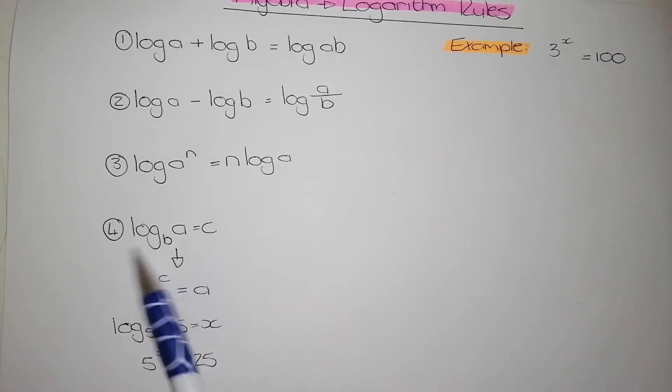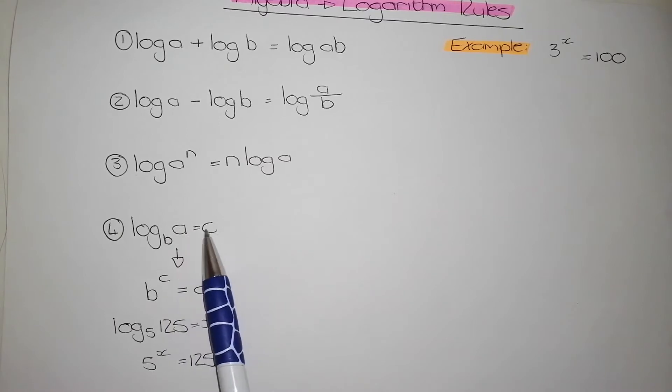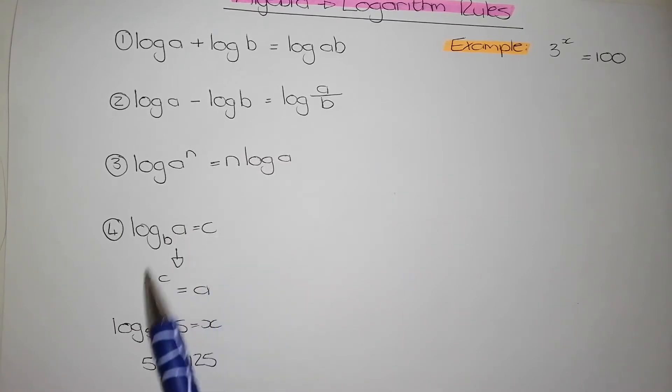And when we have a log and a bottom number with a base number is equal to c, my bottom number becomes my new base number. My answer becomes my power and my base number becomes my answer.